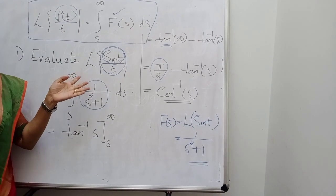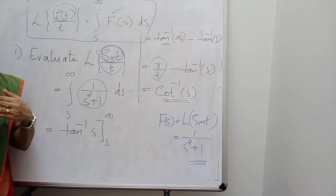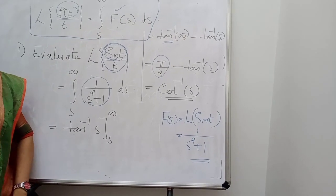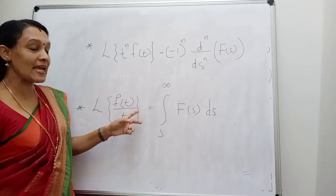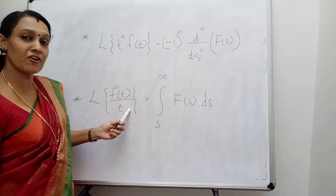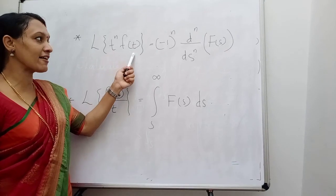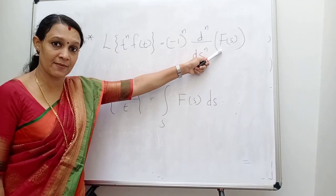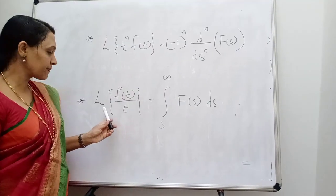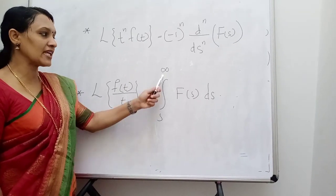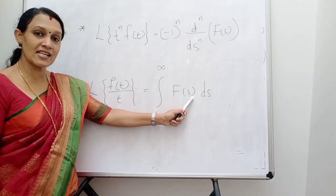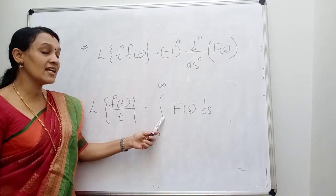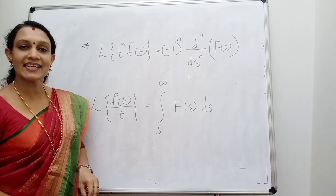Two important formulae were discussed. One is multiplication by t^n — that is in terms of derivatives: L{t^n · f(t)} = (-1)^n · d^n/ds^n · F(s). The second is the division formula — division by t is in terms of an integral: L{f(t)/t} = integral from s to infinity of F(s) ds, where F(s) is the Laplace transform of the numerator f(t). I hope you all understood what was discussed in this class.